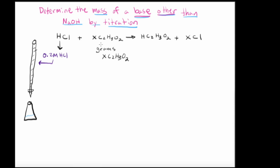And the base that we're going to utilize here is this one, XC2H3O2, where X is some type of metal cation. Let me just go ahead and write that in here, some type of metal cation.